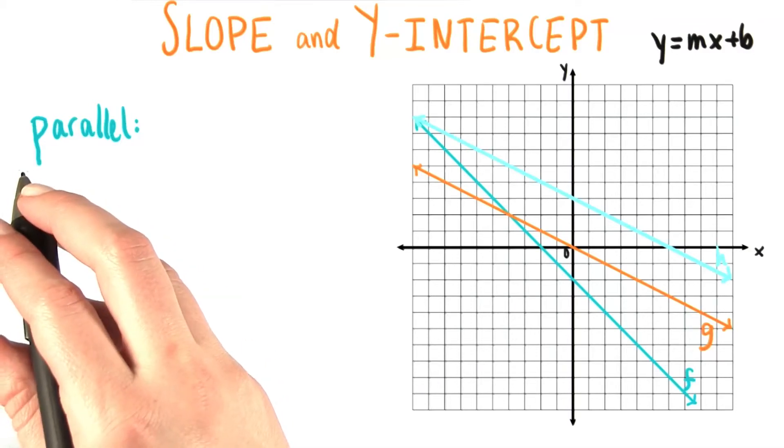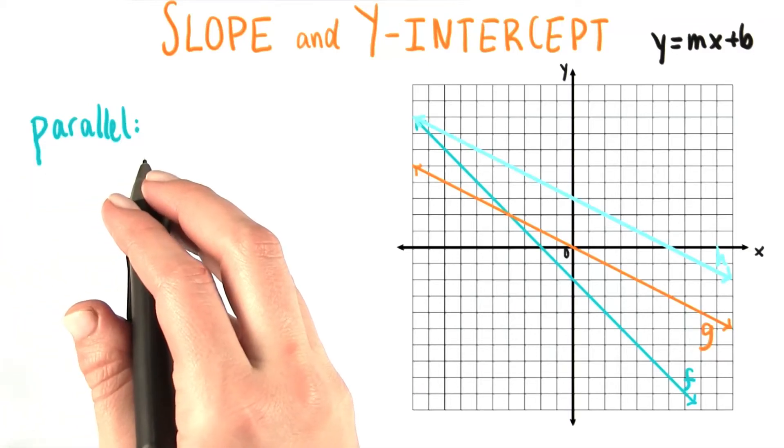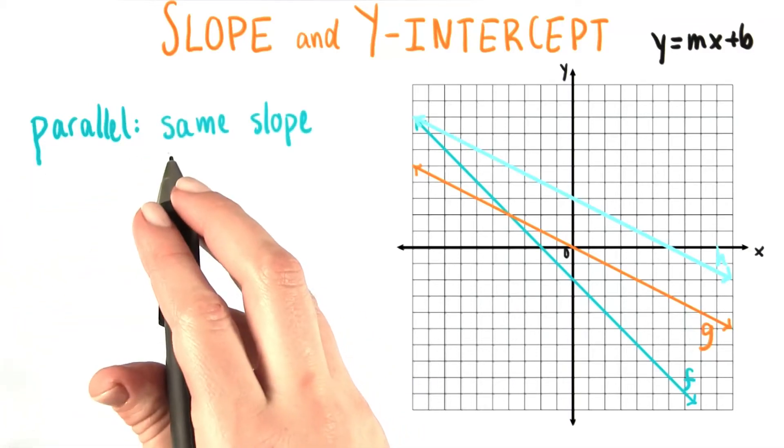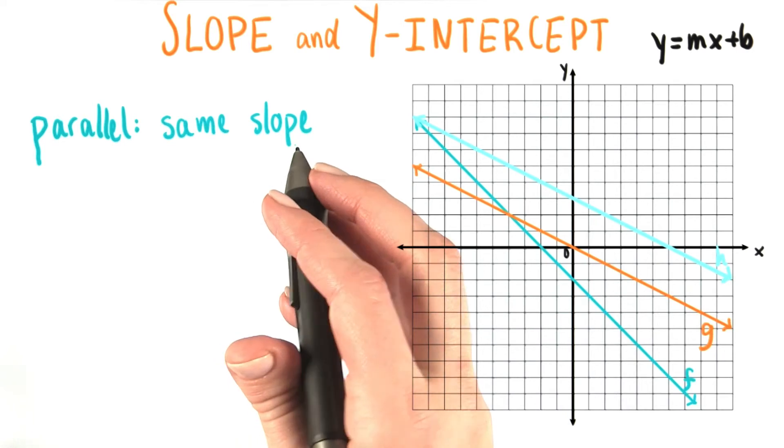As we talked about earlier, if two lines are parallel, that means that they have the same slope.